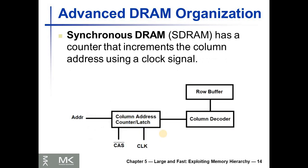More recent DRAMs are synchronous DRAM. These DRAMs have a counter that increments the column address using a clock signal. After sending the row address, the column address is sent with CAS, and this counter uses the clock signal to increment the column address so we can get successive columns from the row buffer.